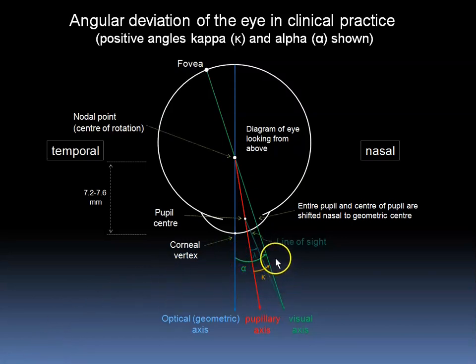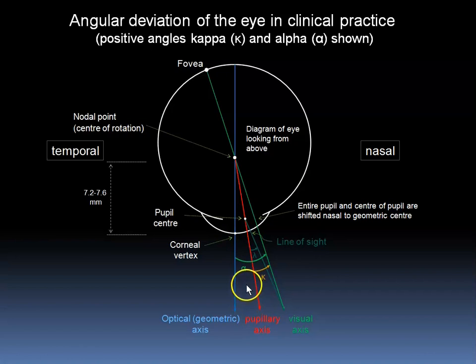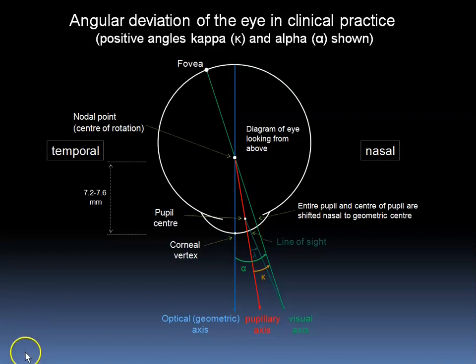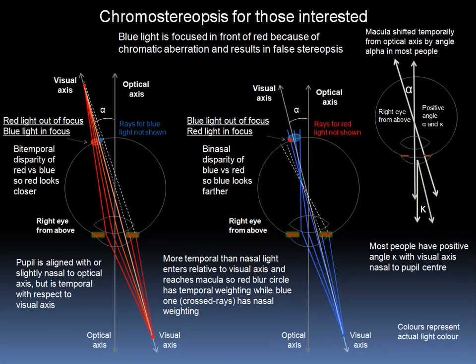Angle kappa is sufficient for most clinical purposes. Angle kappa, if it is positive, makes the eyes look exotropic because the center of the pupil appears to be temporal to the light reflecting off the cornea at the visual axis. In patients with a negative angle kappa, the eyes appear to be esotropic. One way to tell the difference between exotropia and positive angle kappa is that in exotropia one eye must be aligned with the light being shined, whereas in angle kappa neither eye is aligned with the light.